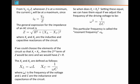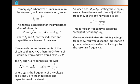That's a particular choice of the frequency at which I would drive the circuit. This particular frequency is called the resonant frequency, omega sub R. If you slowly dialed up and down the driving voltage frequency, you would find that the impedance Z goes smaller and smaller until you got to the frequency of this so-called resonant frequency.